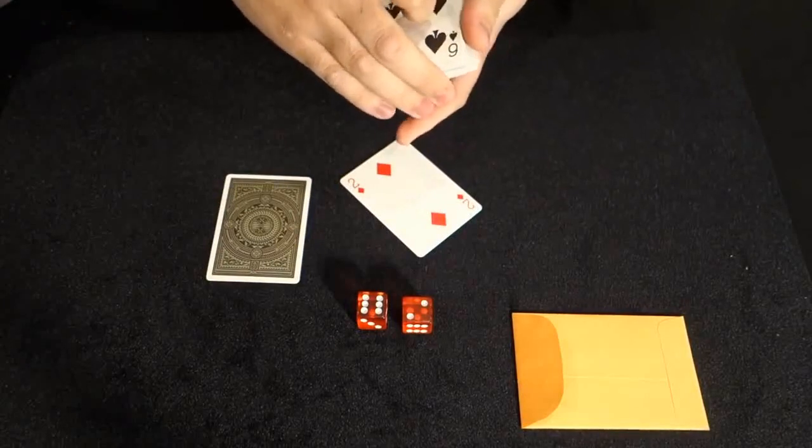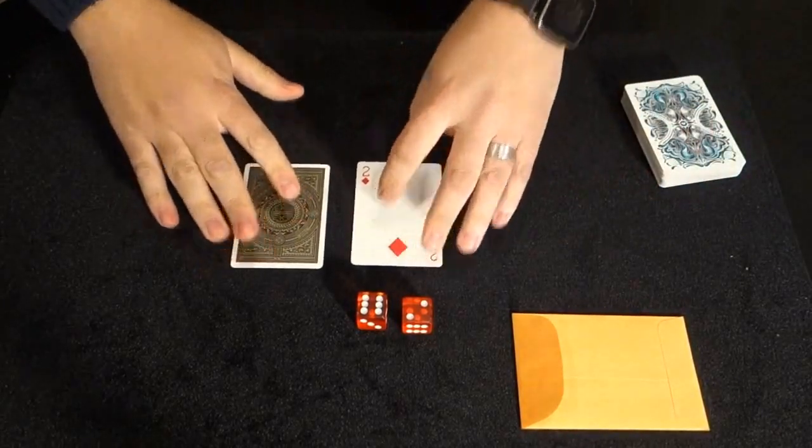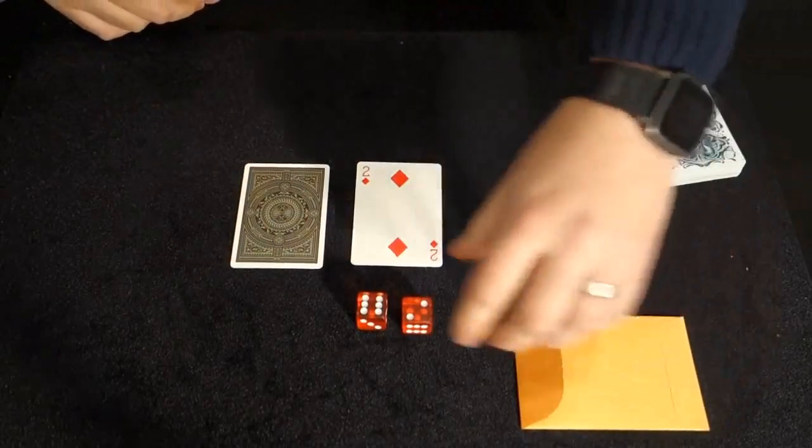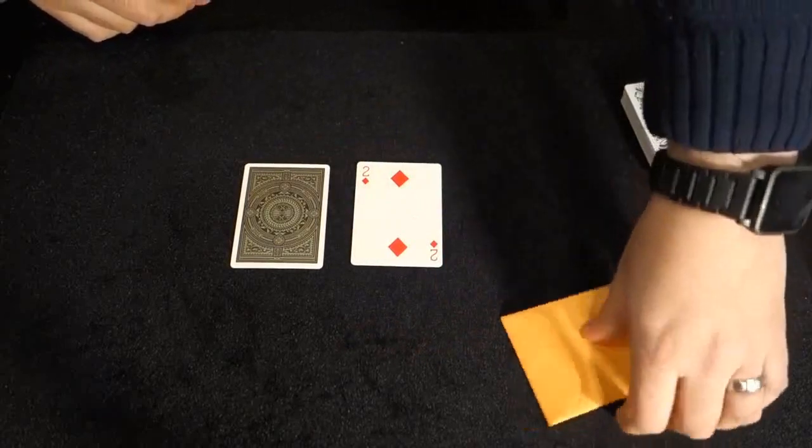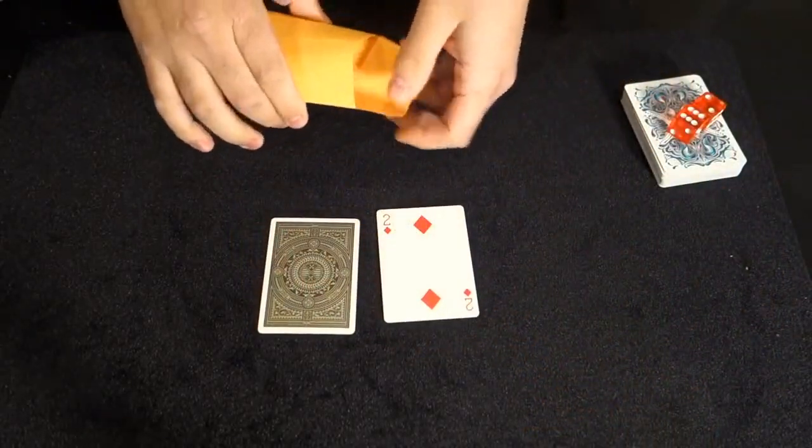But today, we ended up on the two of diamonds. Now, that's interesting. You see, because this envelope has been on the table right here from the very start. And earlier today, I placed one playing card inside.